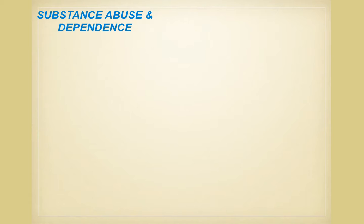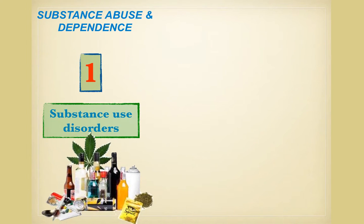The DSM uses two major categories for substance related disorders. The first is substance use disorder, which involves patterns of maladaptive behavior involving the use of psychoactive substances. Substance use disorder includes both substance abuse disorder and substance dependence disorder — continuing to use the psychoactive drug despite knowledge that it causes or contributes to persistent and reoccurring social, occupational, psychological, and physical problems.